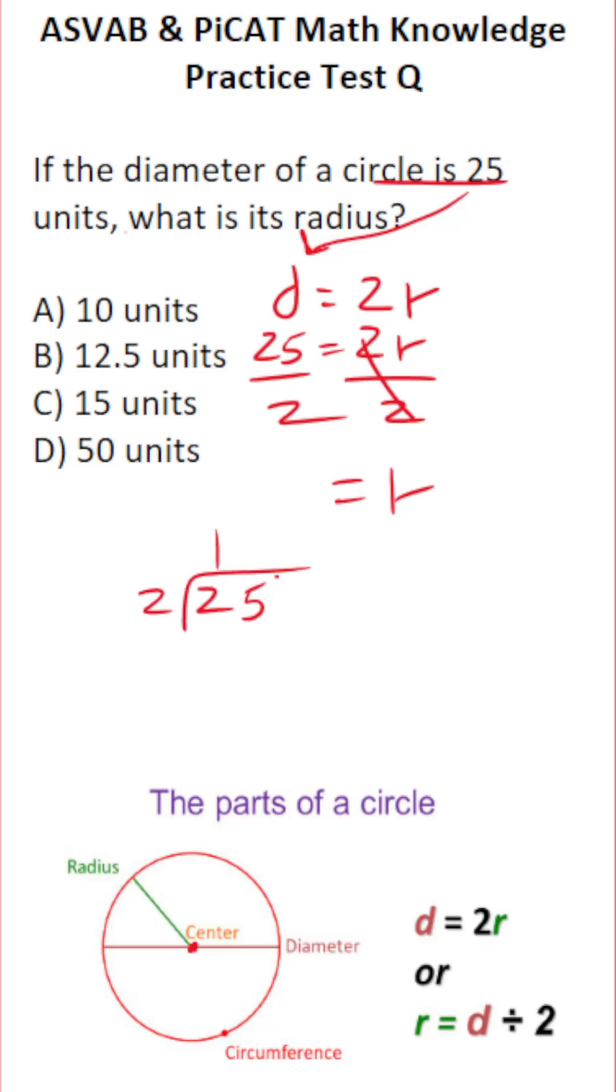2 goes into 2 one time. 2 times 1 is 2. 2 minus 2 is 0, but we've got to drop down this 5. 2 goes into 5 two times without going over. 2 times 2 is 4. 5 minus 4 is 1. How are we going to proceed?